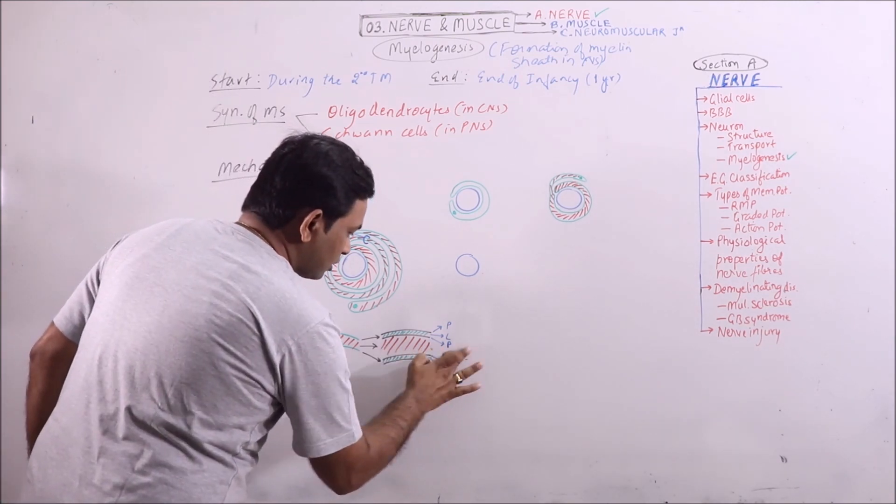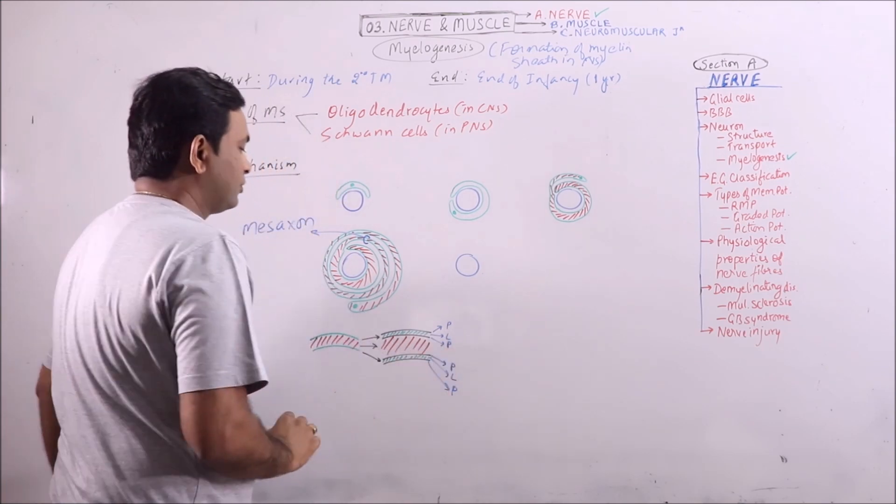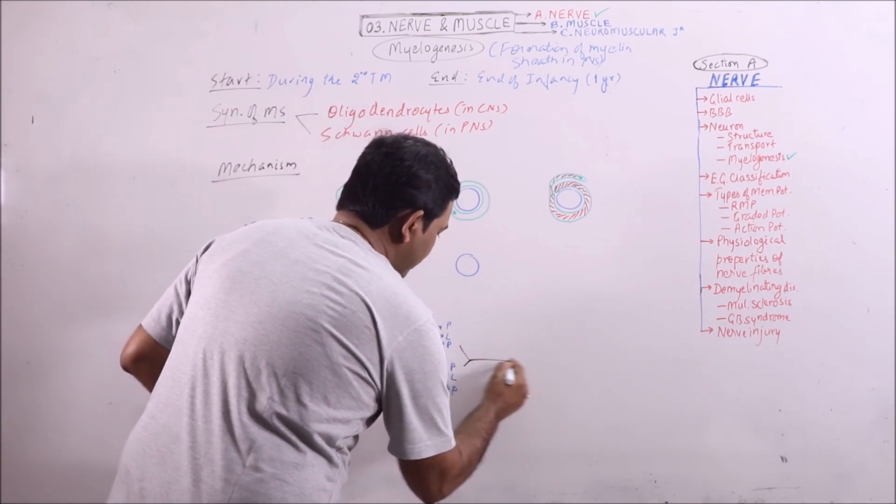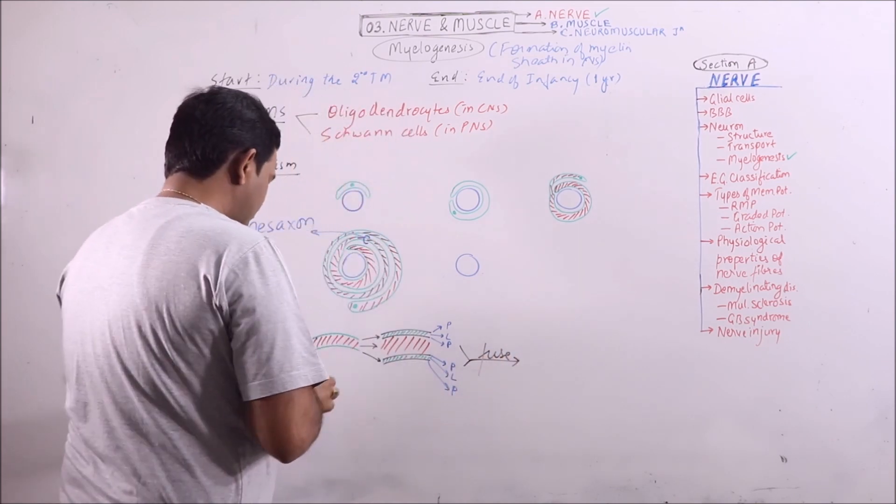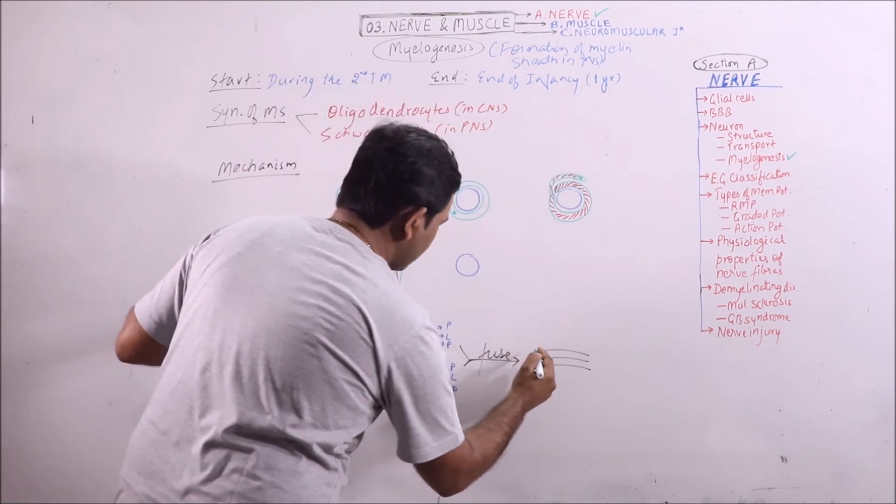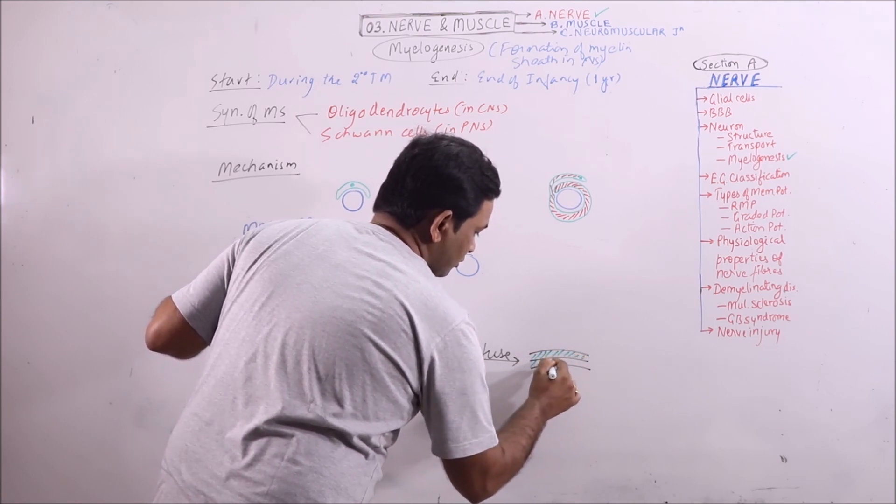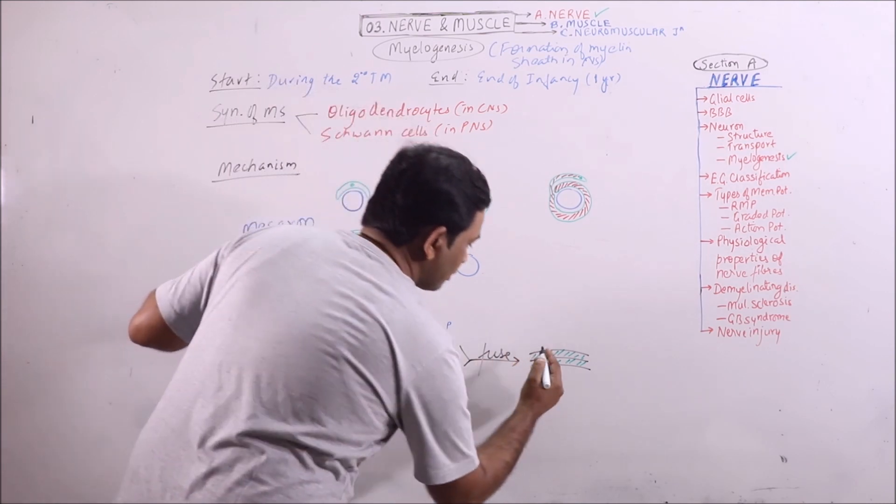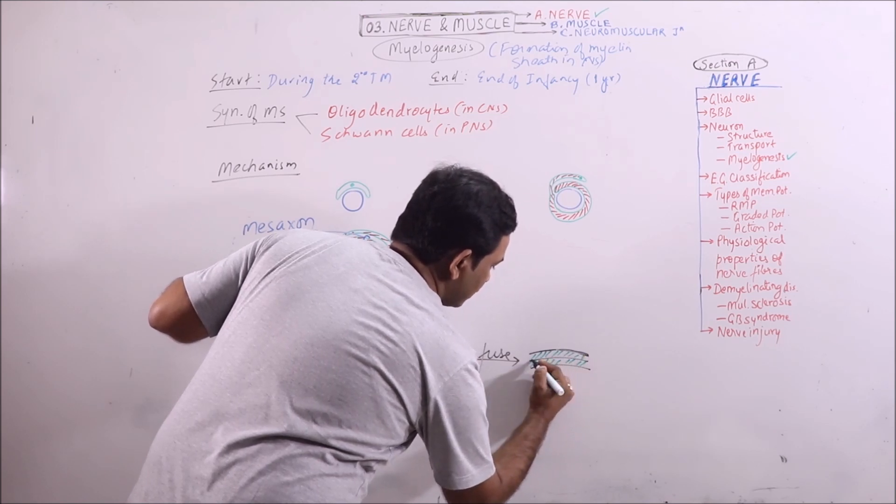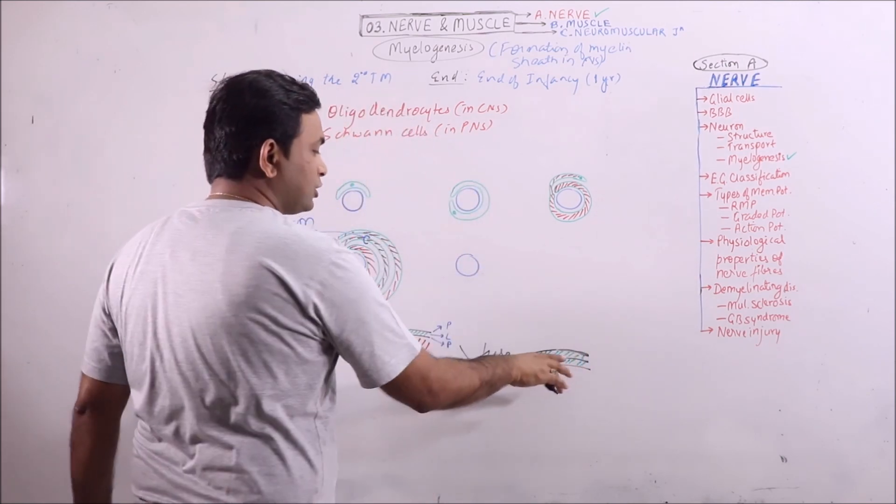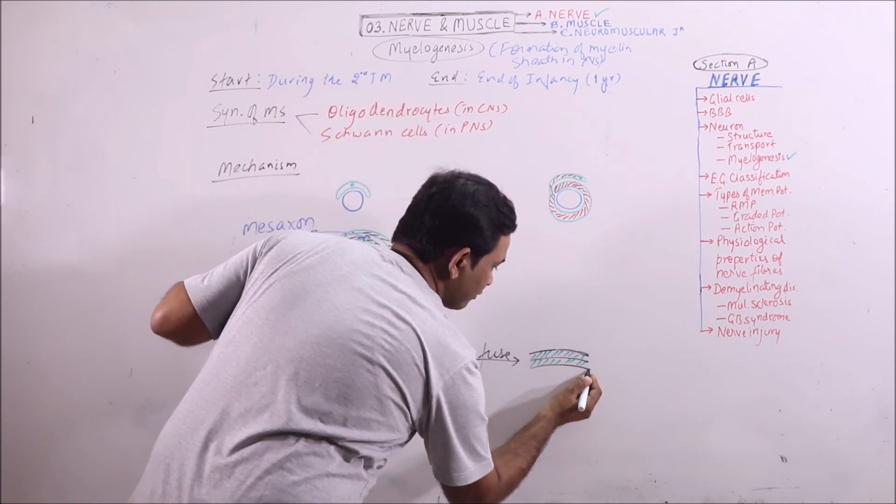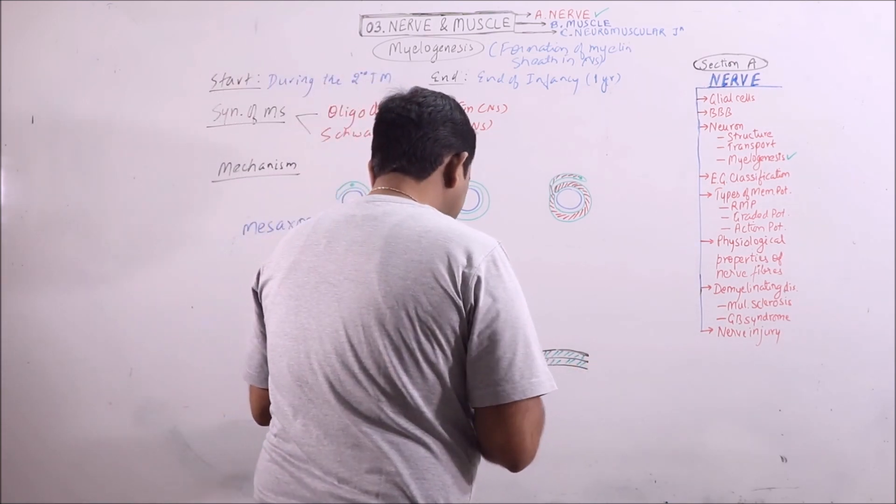So if this is cytoplasm, if these two layers fuse and no cytoplasm is left in between them, then these will appear. When these will fuse with no cytoplasm in between, then the appearance will be like this. This is protein, this is protein layer of outer layer of mesaxome. This is again the protein layer which is formed by the fusion of outer and inner layers of mesaxome. And this is the protein layer of inner mesaxome. Now this has become 5 layered.